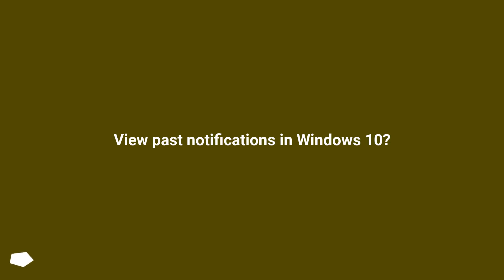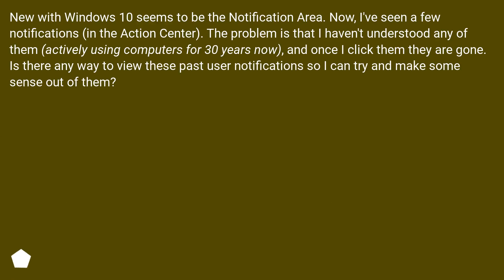How do you view past notifications in Windows 10? New with Windows 10 seems to be the notification area. I've seen a few notifications in the action center. The problem is that I haven't understood any of them — I've been actively using computers for 30 years now — and once I click them they are gone. Is there any way to view these past user notifications so I can try and make some sense out of them?